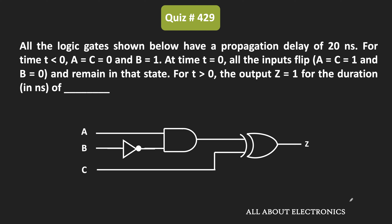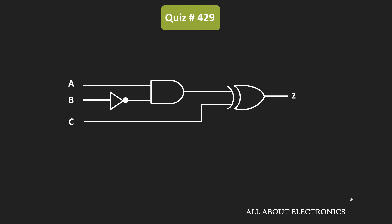In the given logic circuit, the propagation delay of each logic gate is equal to 20 nanoseconds. Let's say the output of the NOR gate is equal to x, while the output of the AND gate is equal to y. With the help of the timing diagram, let us see how this output z changes with time.